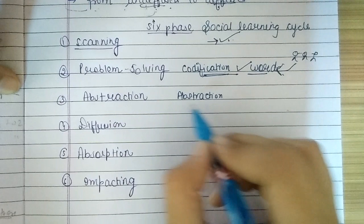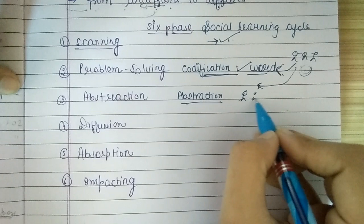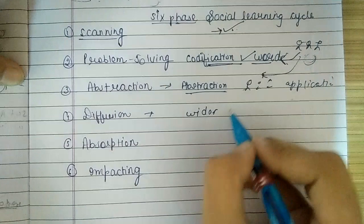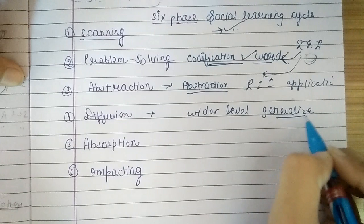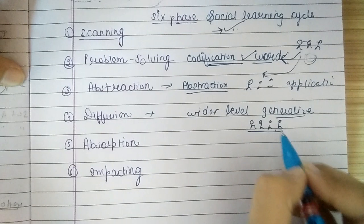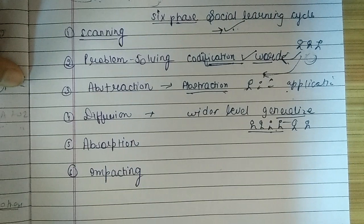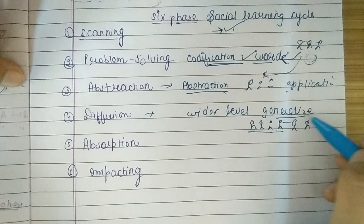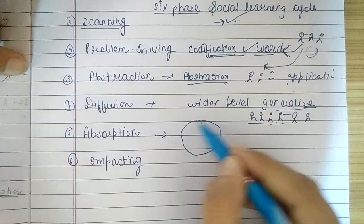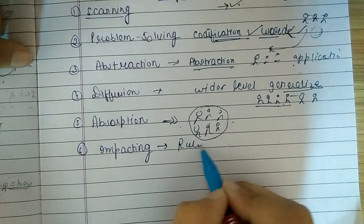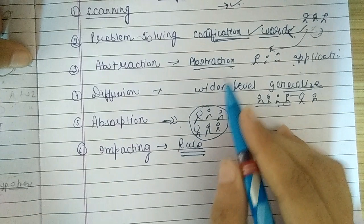The third stage is abstraction — when a solution is found and applied. Abstraction also means generalizing to a wider level. Before, only 3 or 4 people had limited knowledge; after they solved it, we move to diffusion. Diffusion means when they tell the whole organization about the solution — for example, if a machine is wrong, everyone is informed. Then comes absorption — when the rest of the organization adopts the solution. After absorption comes impacting — when the whole process becomes a rule for the organization.